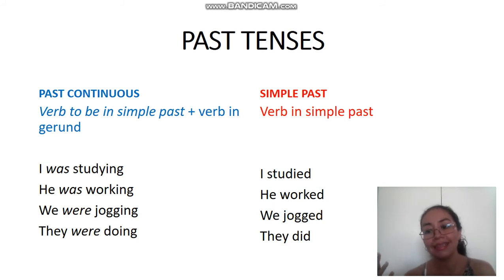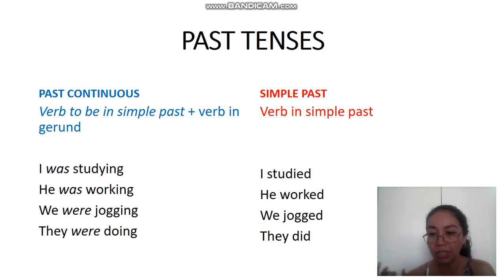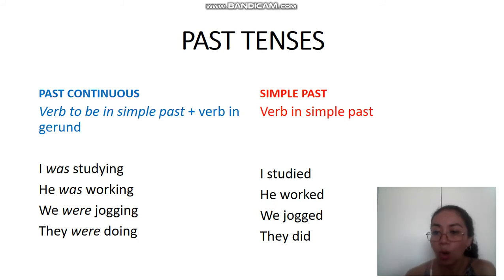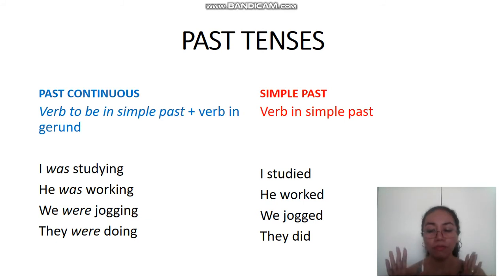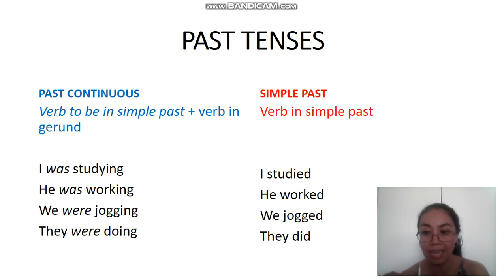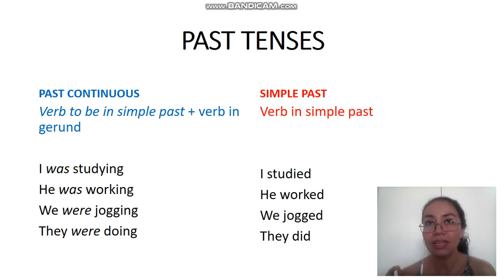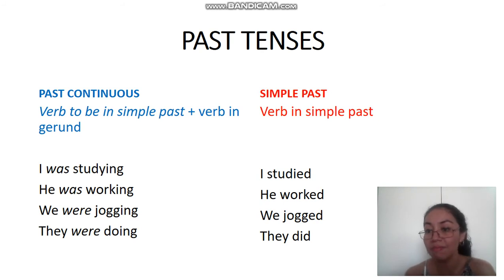Now let's check the simple past. The simple past is simple because the verbs have a conjugation and that's it — you don't need an auxiliary verb. For example, 'study' becomes 'studied,' 'work' becomes 'worked,' 'jog' becomes 'jogged,' and the irregular verb 'do' becomes 'did.' For regular verbs, remember the correct pronunciation. For irregular verbs, you need to remember the conjugation because there are no rules.